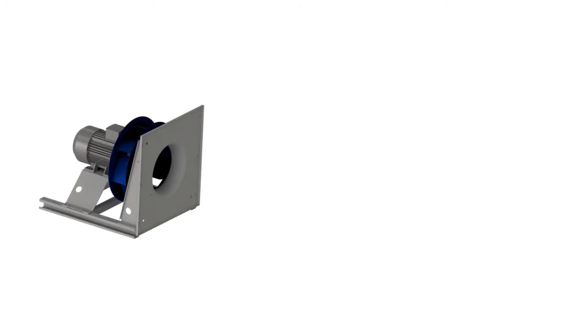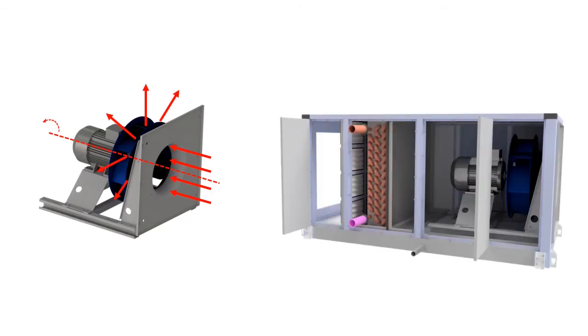So, what is a centrifugal fan? It's a fan where the inlet of air is axial, so parallel to the rotation axis, and the outlet is radial. It's quite common in air-conditioning systems, like this example.